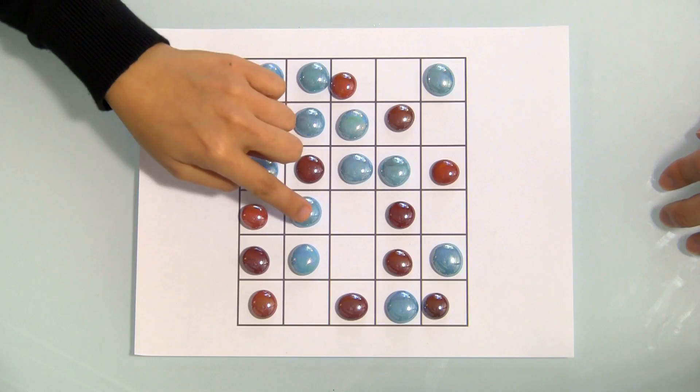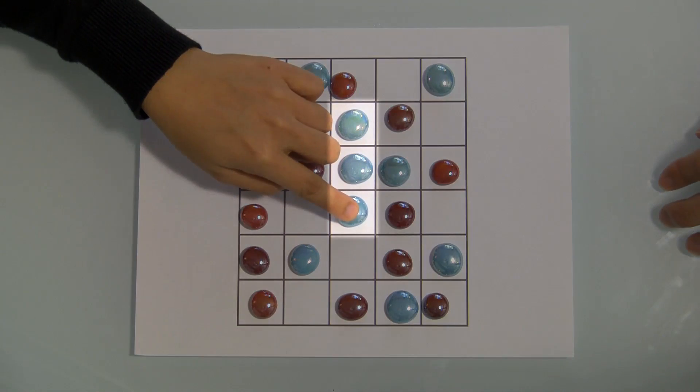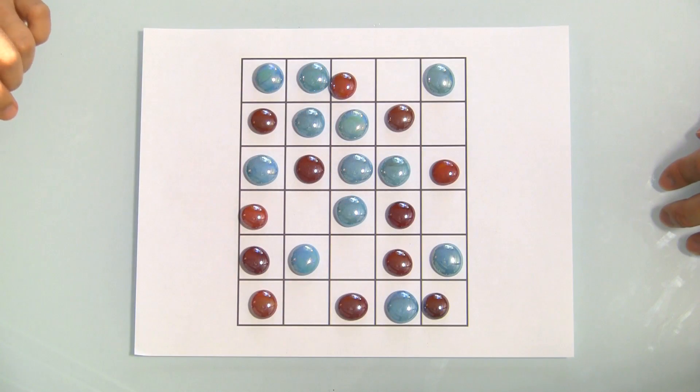You make a capture by moving one of your pieces to make a row of three. Then you can choose an opponent's piece to capture.